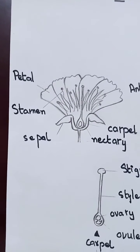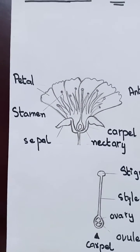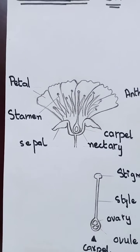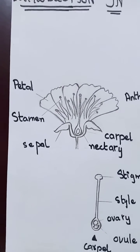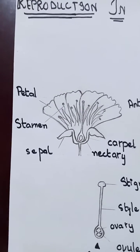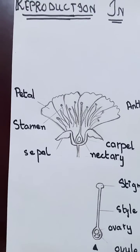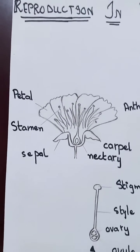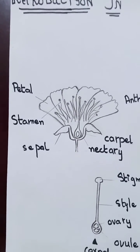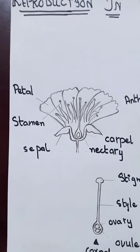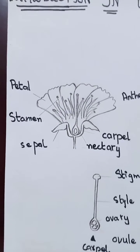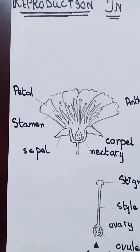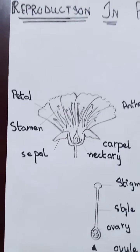There is stamen. Stamens are the male reproductive organs. And the last part of the flower is the nectary. The nectary is where a sugary solution called nectar is made. Insects collect nectar for food.